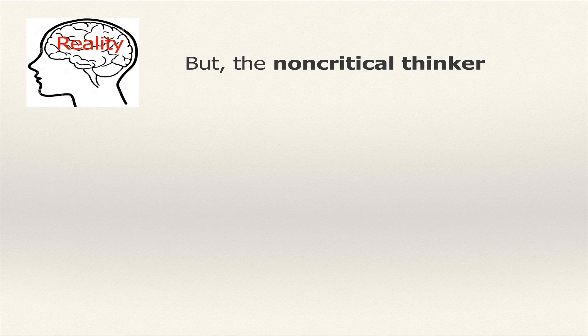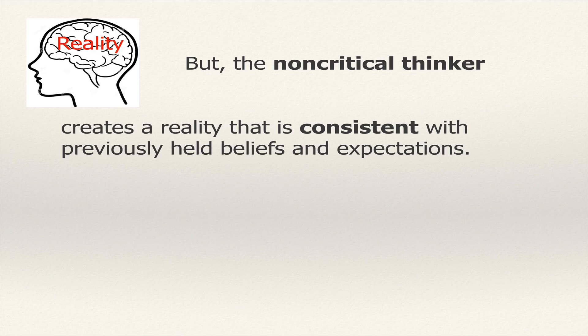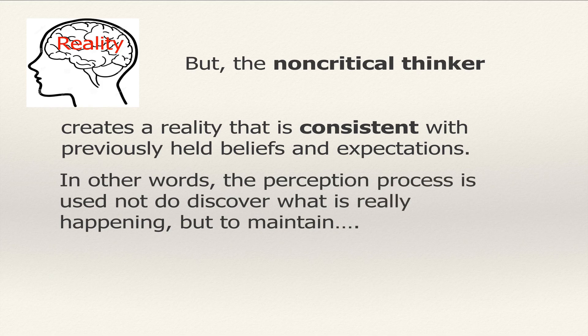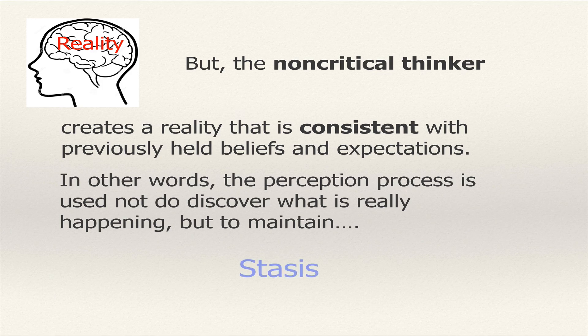The non-critical thinker uses the perception process by creating a reality that is consistent with previously held beliefs and expectations. In other words, he believes something's going on or something's the way it is, and so he sees the world through that filter, that prism. In other words, the perception process is used not to discover what is really happening, but to maintain stasis.